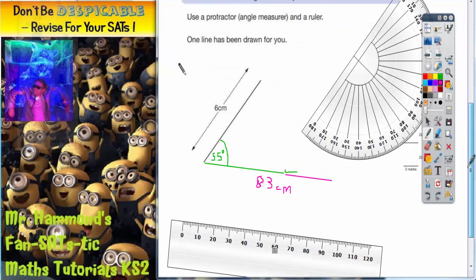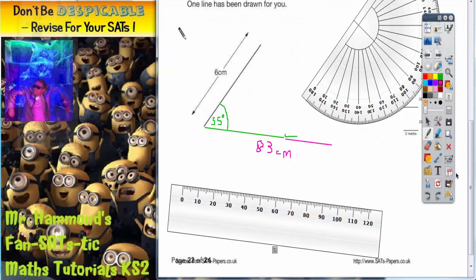So all we've got to do to do that line is basically get our ruler and join the two lines together to make a triangle.